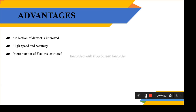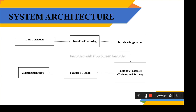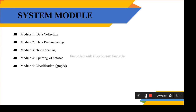The advantage of this approach is improved high accuracy compared to the existing system, because we are using both content-based filtering and collaborative filtering. More features can be extracted, and we are also using an NLP algorithm to extract from user reviews. The system modules are: data collection, data pre-processing, text cleaning, splitting of the dataset using training, testing, and validation, and then feature selection and classification plots using Matplotlib.